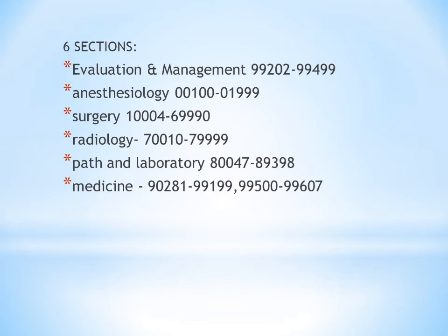Category I has six subsections. The first is Evaluation and Management, commonly called E&M, with code ranges 99202–99499. When a patient comes to the doctor, the initial procedures — medical history, chief complaint, physical examination, and medical decision-making — all come under the Evaluation and Management chapter.